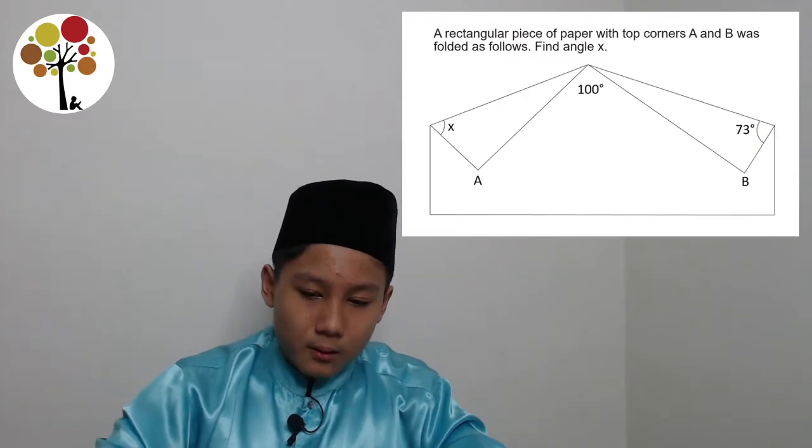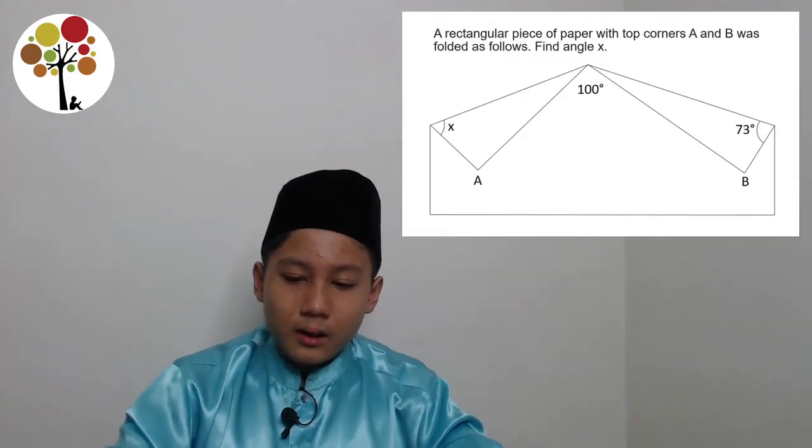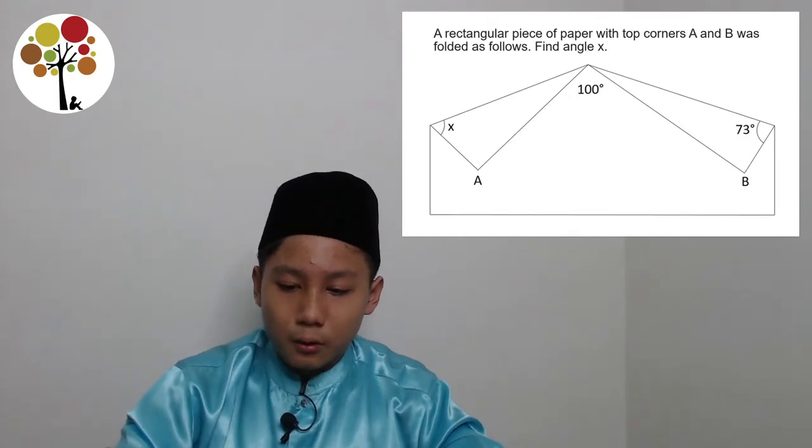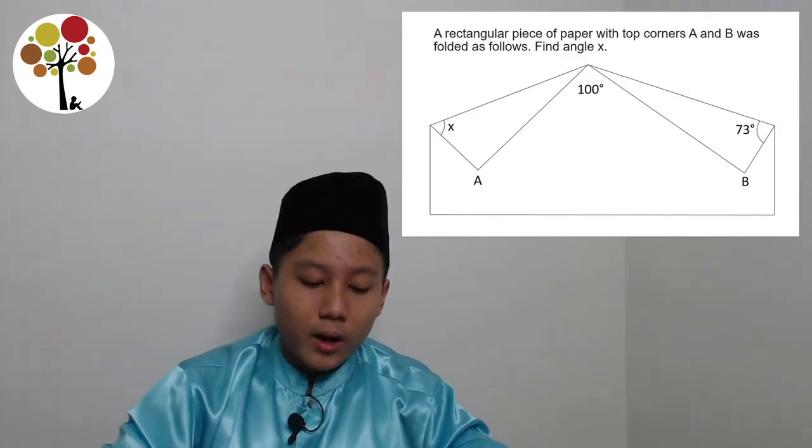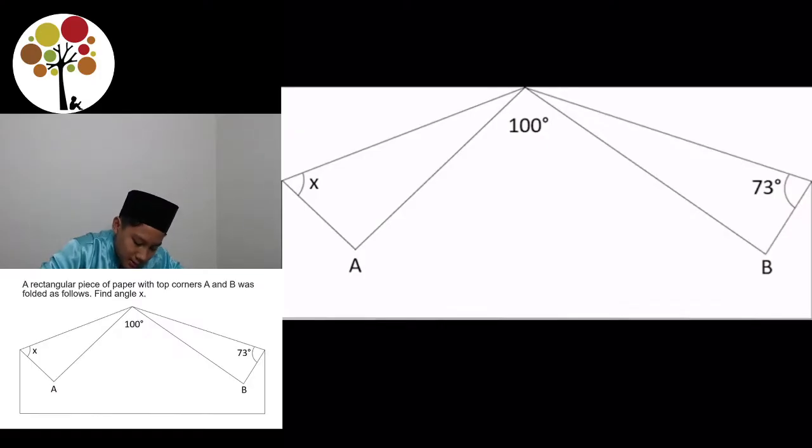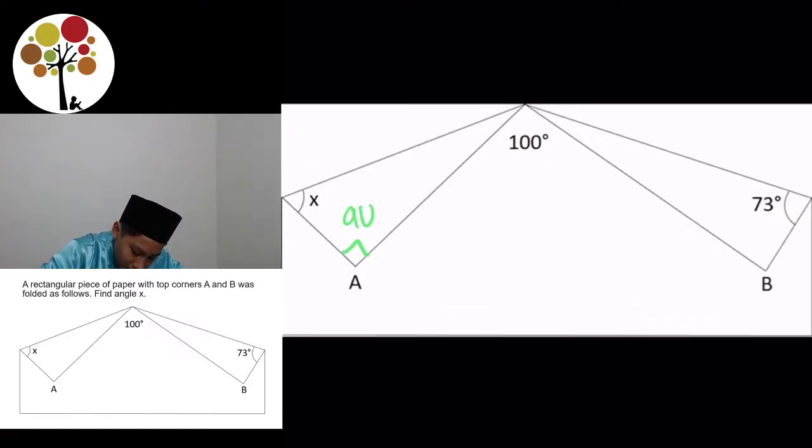So, first question. A rectangular piece of paper with top corners A and B was folded as follows. Find angle X. So, first thing I'm going to do is label what I already know, which is this 90 degrees over here and this 90 degrees over here.